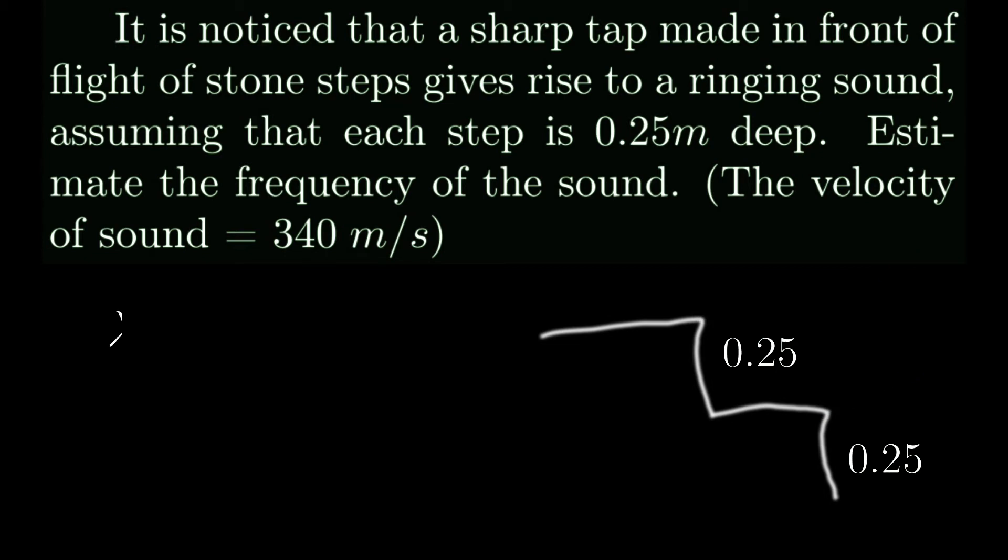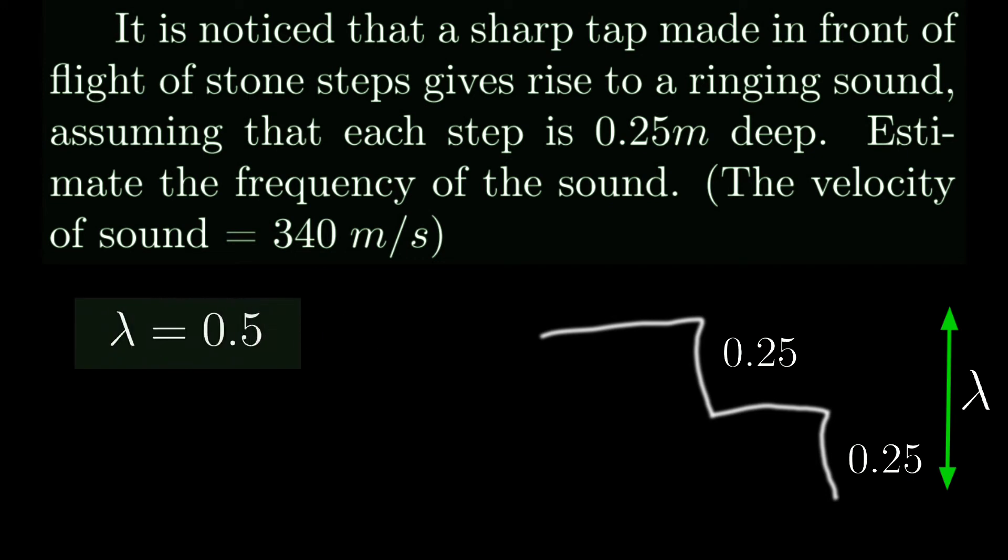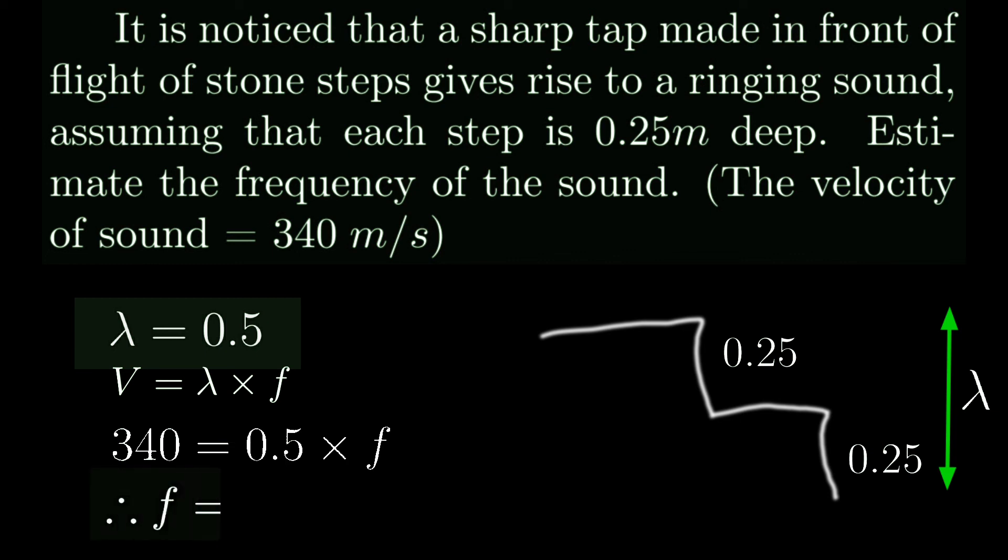The wavelength is equal to 2 times 0.25, so wavelength equals two steps, which means wavelength is 0.5 meter. Velocity equals wavelength times frequency, so 340 equals 0.5 times f, therefore f equals 680 hertz. This is the normalized answer.